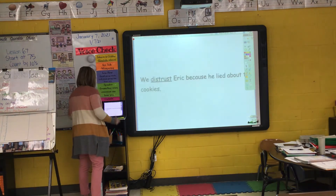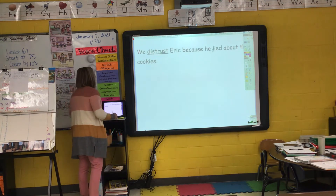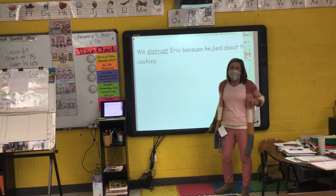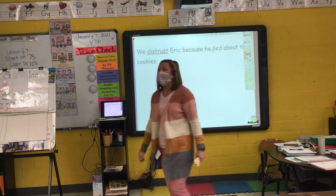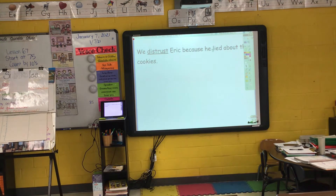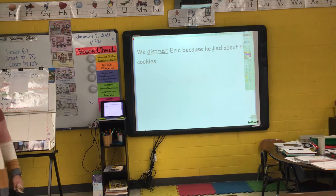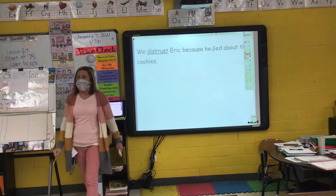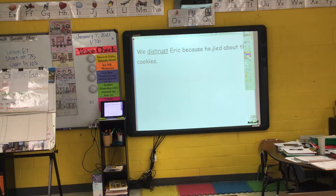That's what the word 'additional' means. So if I take a look at this sentence: 'We distrust Eric because he lied about the cookies.' Notice I have the word 'distrust' underlined. What is the root word or base word of 'distrust'? Trust. I know that to trust someone means I can rely on them or count on them to do the right thing. When I put the prefix DIS in front of 'trust,' DIS means 'not.' So if I say that I distrust someone, that means I do not trust them, because he lied to me before.